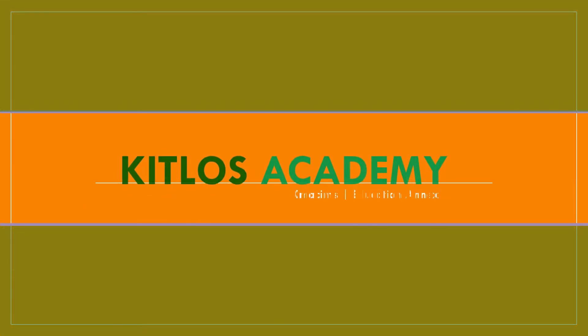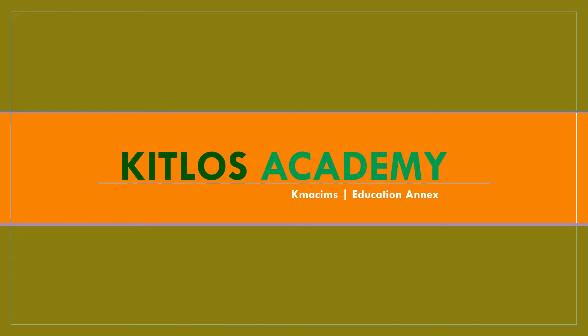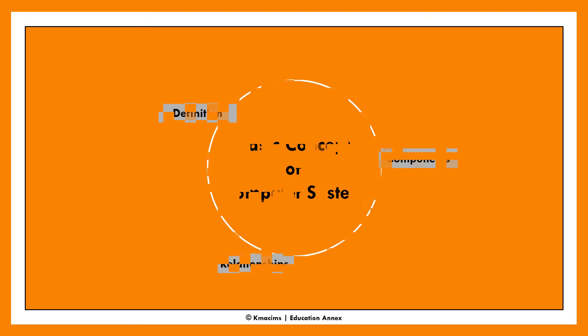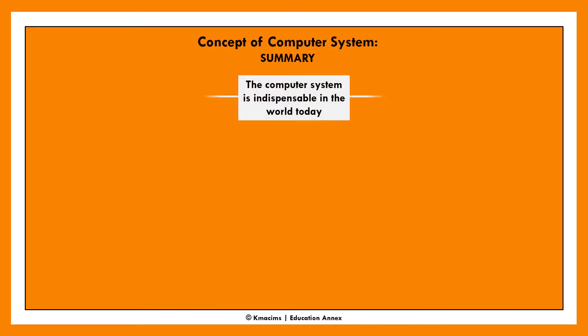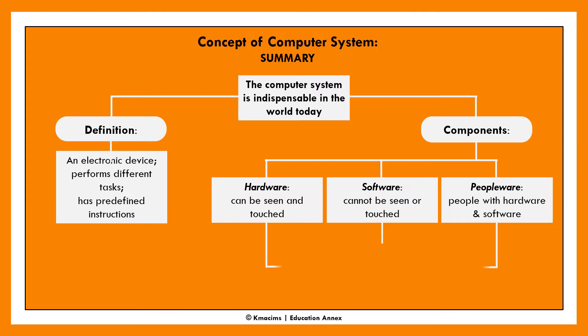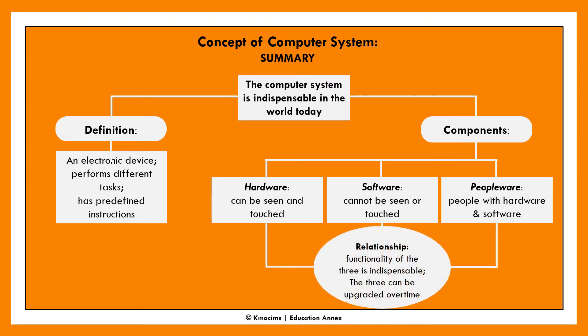In the world today, the computer system has proven to be invaluable to mankind. It is used virtually in all areas of human endeavor — in production, communication, medicine, science and technology, etc. In this tutorial, we discuss the concept of the computer system, basically for junior secondary schools and beginners. You will learn what a computer system is, the components of a computer system, and the relationship between the components.